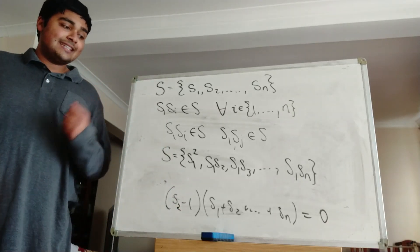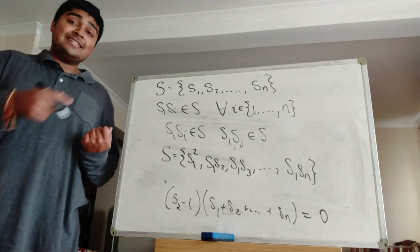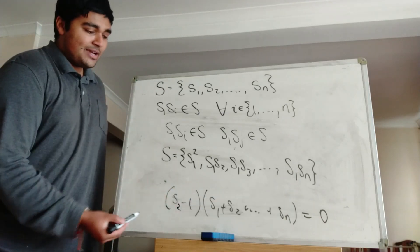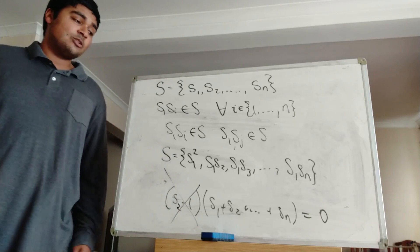And now because we know that each of them are distinct, and if S1 was equal to 1, in particular, that means that S2 is not equal to 1. So we have this equation here. Then we can go ahead and cancel by this thing here.